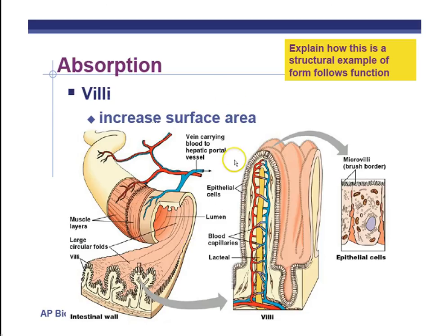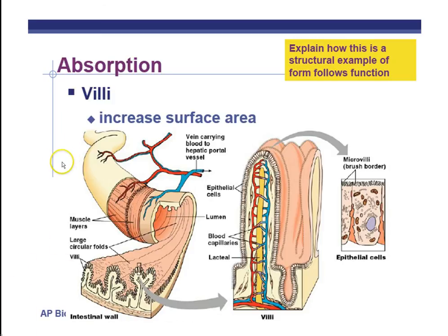We're still in the small intestine. We're secreting things from the pancreas as far as digestive enzymes — and remember, also bicarbonate, which neutralizes acid in the intestines, is secreted by the pancreas as well. The liver is secreting bile, also the gallbladder, to emulsify fats.